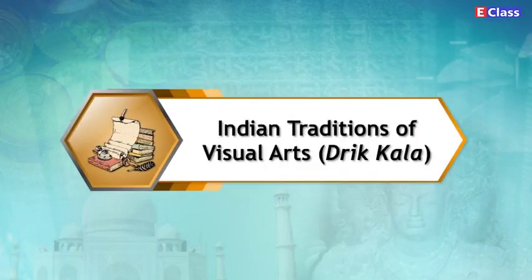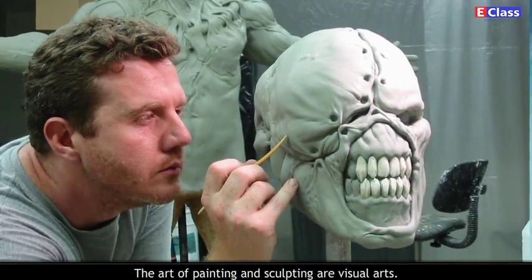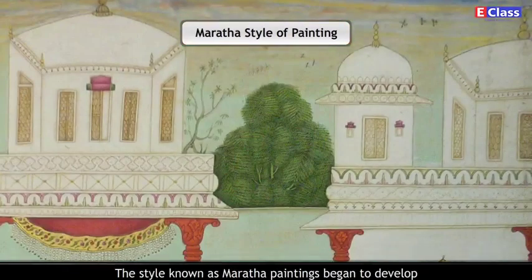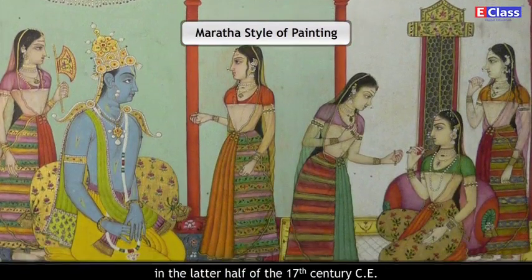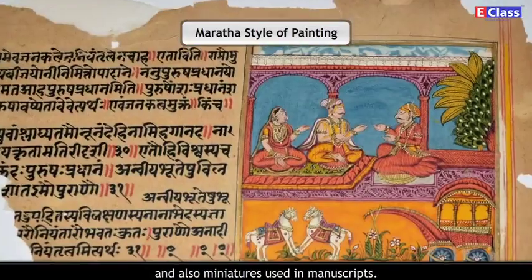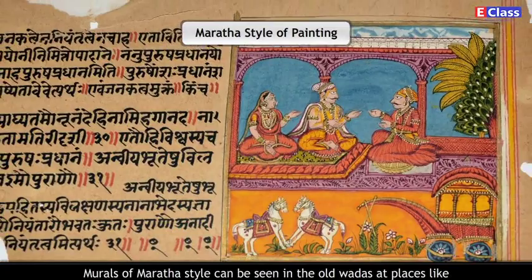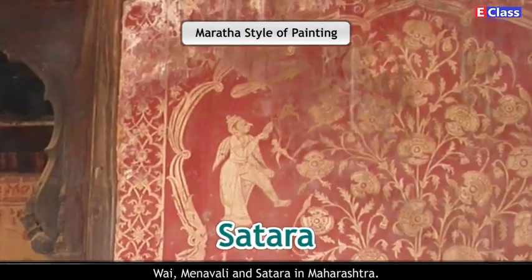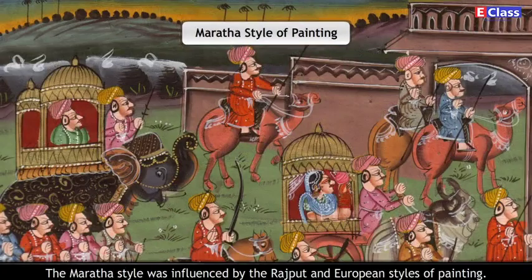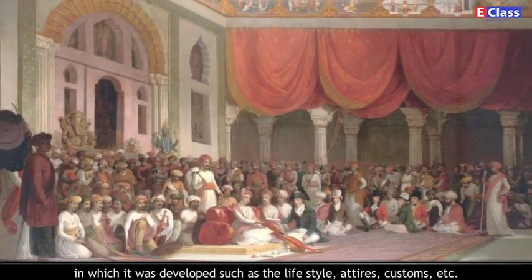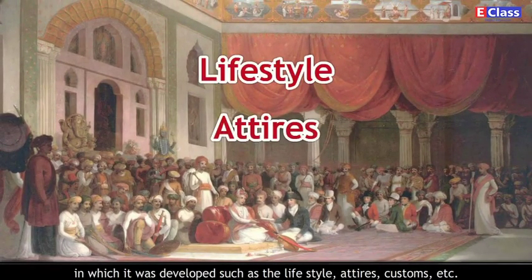Indian Traditions of Visual Arts. The Art of Painting and Sculpting are Visual Arts. The Maratha style of painting is an example of art style. Maratha paintings began to develop in the latter half of the 17th century CE, consisting of coloured paintings occurring as murals and miniatures in manuscripts. Murals of Maratha style can be seen in the old Vadas at places like Vai, Minavali and Satara in Maharashtra. The Maratha style was influenced by the Rajput and European styles of painting. Painting styles help us understand the lifestyle, attires, customs, etc. of the times in which they were developed.